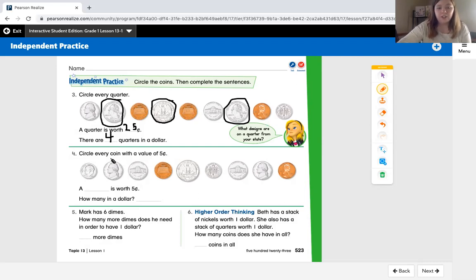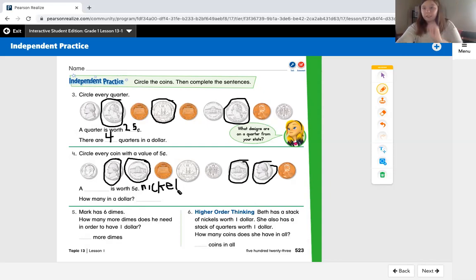Number four. Circle every coin with a value of five cents. I know that a coin that is worth five cents is called a nickel. And I know that nickels look like this. They are silver. They have a building on the back. So all of these are nickels. And I already answered the first part of this question, a nickel. Because I'm using my teacher pen, I know that I'm not going to fit nickel on there, so I'm just going to write it off to the side.